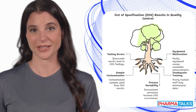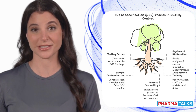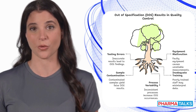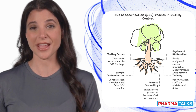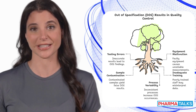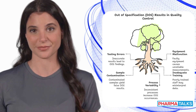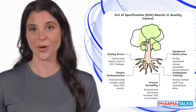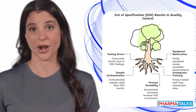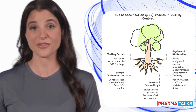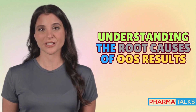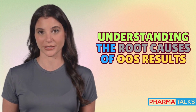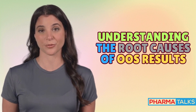But why do OOS results occur? The reasons can range from laboratory errors, such as instrument calibration issues or analyst mistakes, to manufacturing inconsistencies like improper mixing or contamination. Identifying these root causes is crucial because repeated OOS findings can lead to delayed product releases, increased costs, or even regulatory scrutiny. Understanding the root causes of OOS is essential for maintaining product quality and ensuring compliance with regulatory standards.